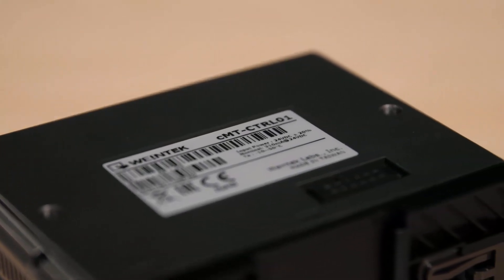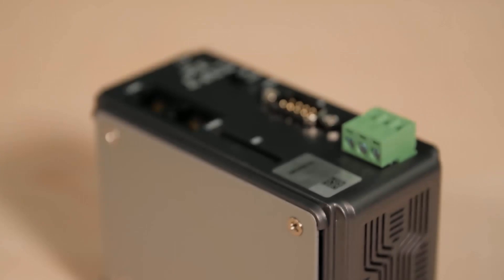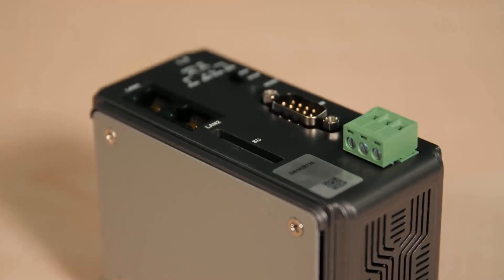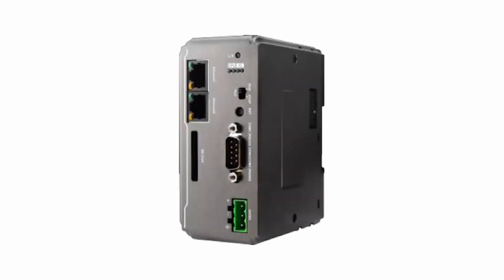Regarding the CMT-CTRL-01, it supports data sampling and event log functions, and historical data can be stored on an SD card or synchronized to a SQL database. The functionality essentially makes the CMT-CTRL-01 an automation data center by integrating IT and OT connectivity for automation systems.